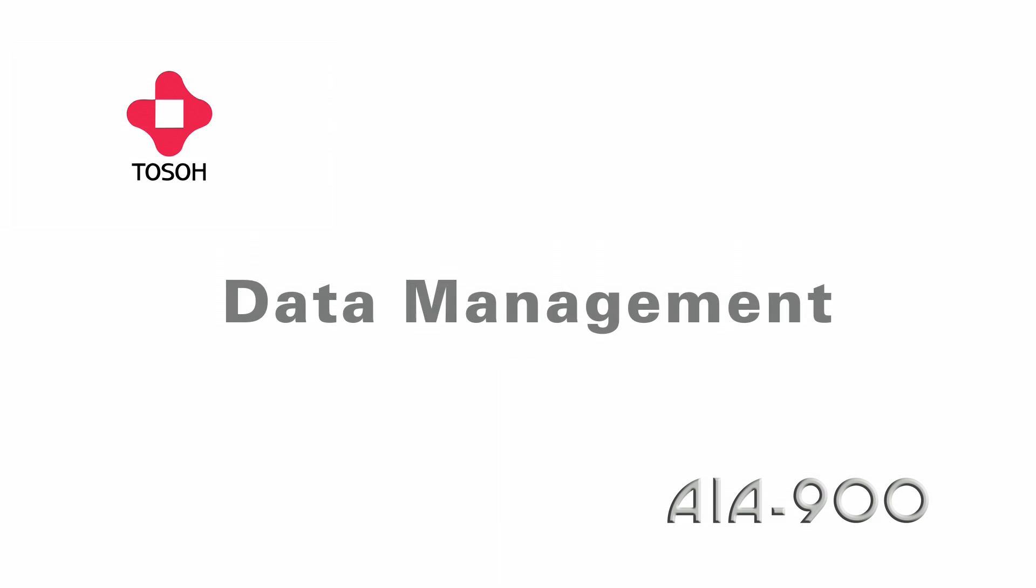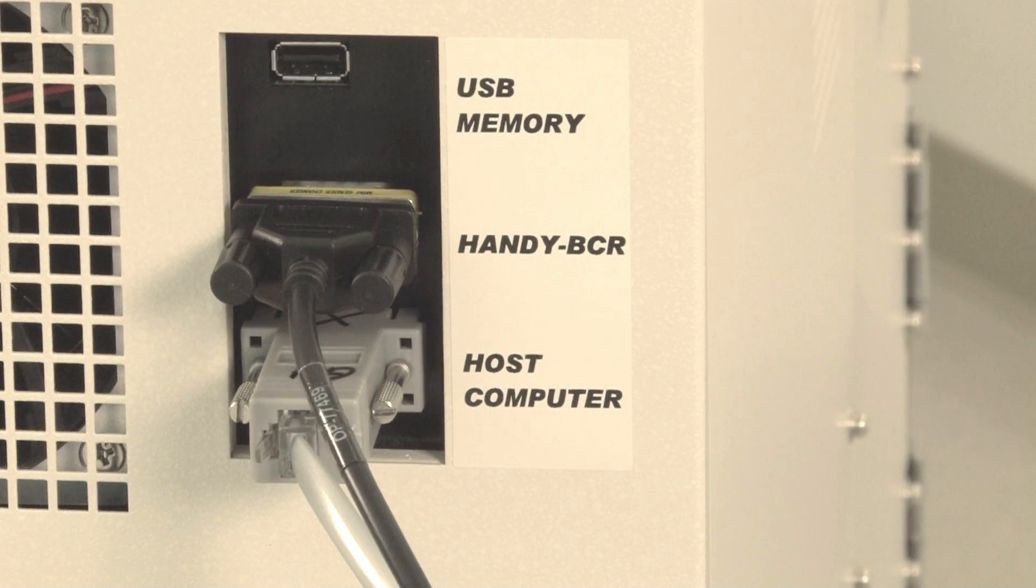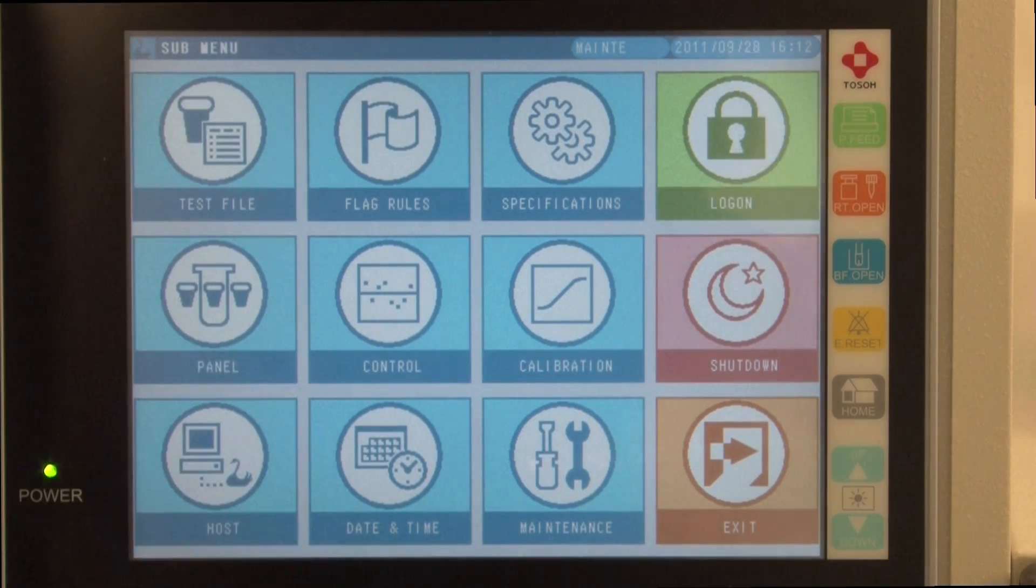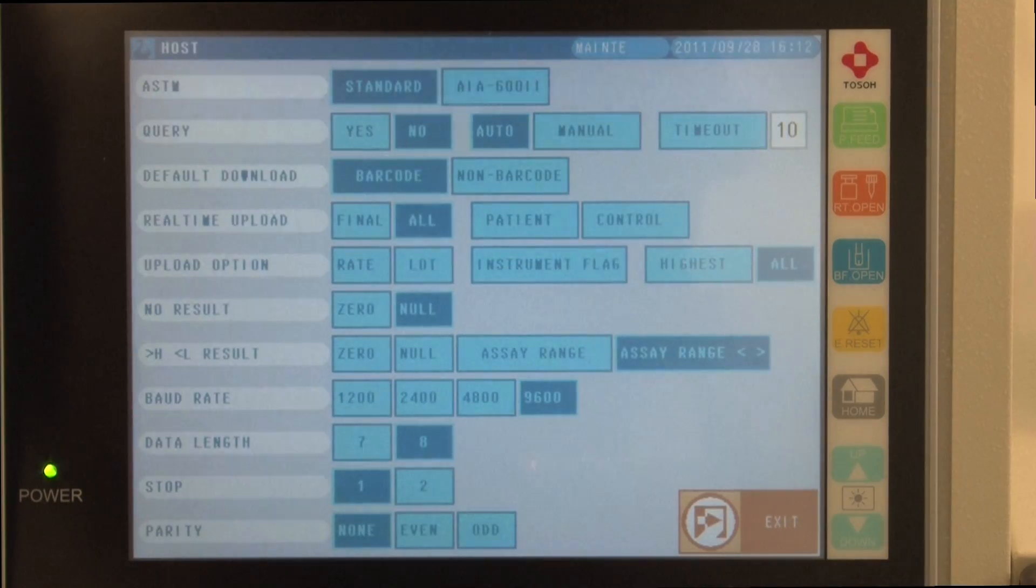Data management. The AIA 900 can be bi-directionally interfaced to any LIS system. The software is icon based and the touch screen monitor allows the operator to control operation from the screen.